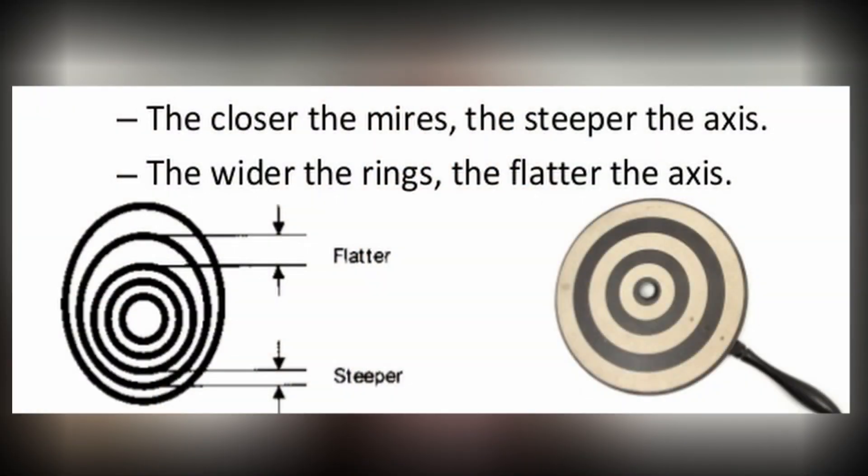In Placido disc interpretation, the appearance of the mires is what the software interprets to determine the shape of the cornea. Areas where the mires are closer together correspond to a steeper corneal curvature, and the further apart the mires are, the flatter the corneal curvature. A perfectly spherical eyeball would demonstrate equally spaced mires over its entire surface. However, most people have variations where we would note distortion or wavy mires. Most software now incorporates a color scale which really helps us visualize the cornea. The Placido disc technology also gives us an idea of how healthy a person's tear film is in the context of dry eye disease.